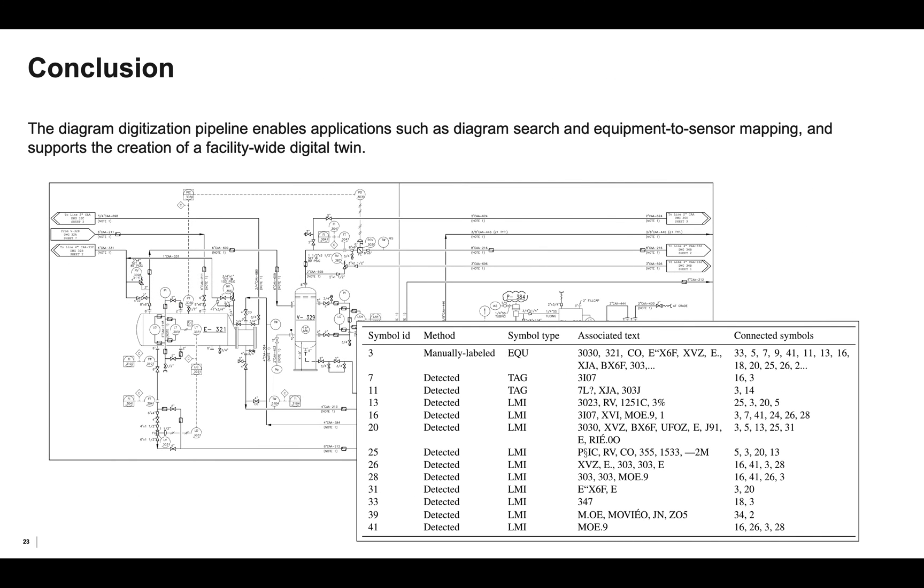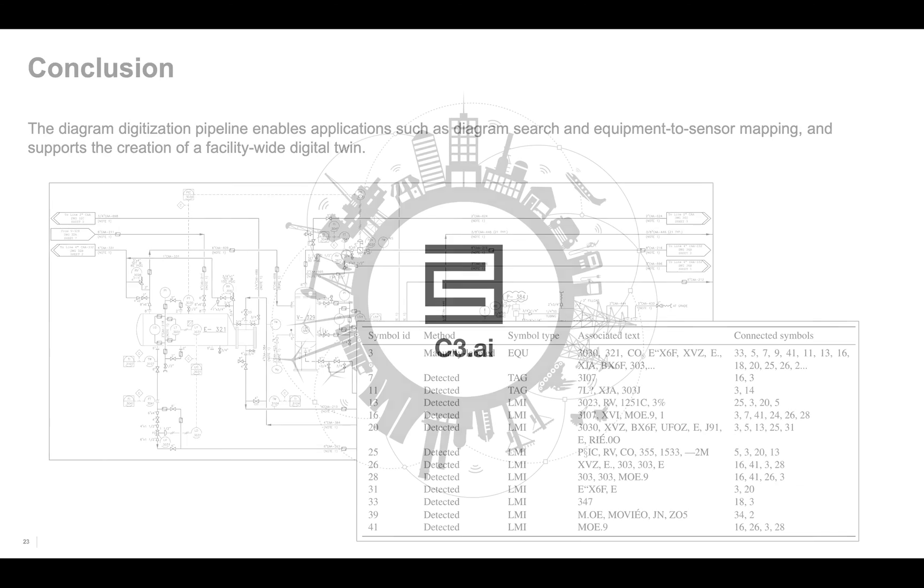So our diagram digitization pipeline transforms unstructured diagrams into structured information, and empowers applications such as diagram search and equipment sensor mapping. When combined with operational data, our pipeline supports the creation of a digital twin, which can enable applications such as machine learning-based predictive maintenance. We hope to use this pipeline to transform legacy engineering drawings and power the next generation of industrial AI applications. Thank you.